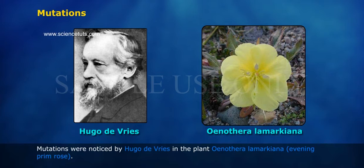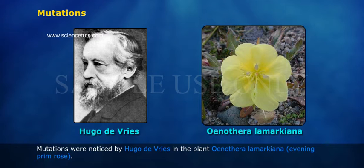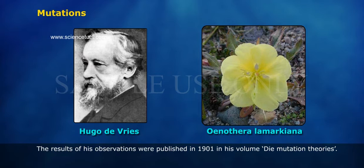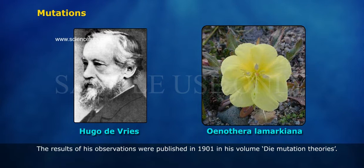Mutations were noticed by Hugo de Vries in the plant Oenothera lamarckiana, the Evening Primrose. The results of his observations were published in 1901 in his volume Die Mutations Theories.